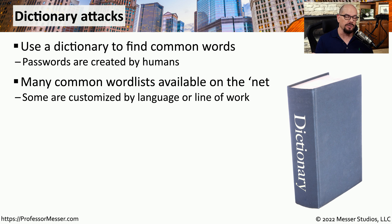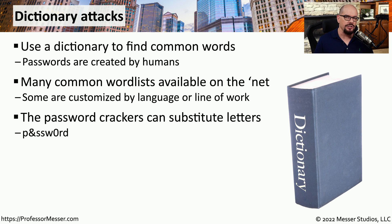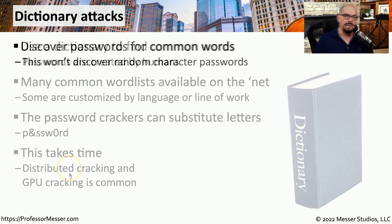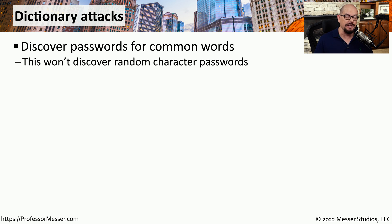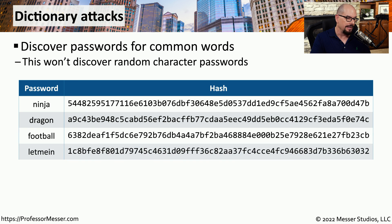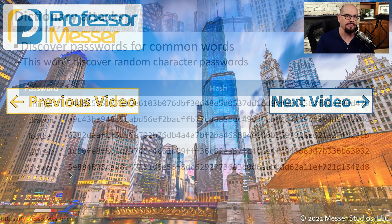Attackers might also use specialized word lists that they can download from the internet. For example, if they retrieved a set of hashes from a medical facility, they might want a dictionary that has more medical terms. And if you think you can fool the hackers by changing an O to a 0 or an L to a 7, they have already thought of this — during the dictionary attack, they will also substitute letters that are commonly swapped when people create passwords. Even though the number of possible words is smaller, it still uses a lot of CPU cycles, so attackers would likely use a distributed cracking method or a graphics processing unit to provide additional processing power. The limitation of a dictionary attack is that anything not in the dictionary won't be discovered, but if someone is using standard words like ninja, dragon, football, 'let me in', or 'password', a dictionary attack is perfect for finding those passwords.